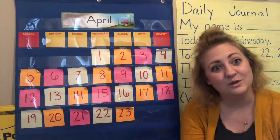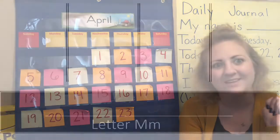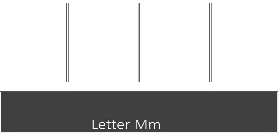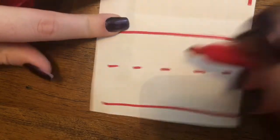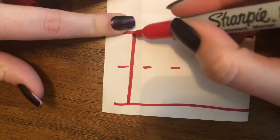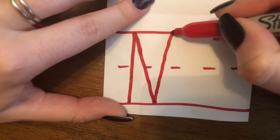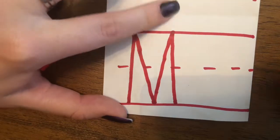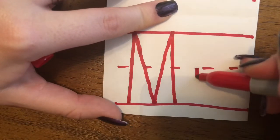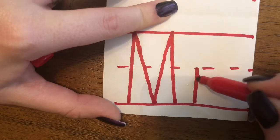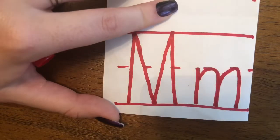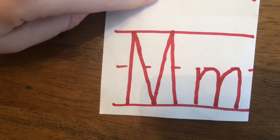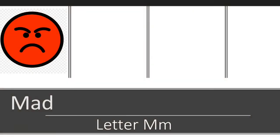Now let's go ahead and go to our letter M for today. Today's letter is the letter M. M makes the sound M. We're going to be writing our letter M. We start at the top, make a big line down, go back to the top, big line down, big line up, big line down — that's our uppercase M. Our lowercase M, we start in the middle, little line down, then we do a curve to the bottom, and a curve to the bottom. So we have our uppercase M and our lowercase M.